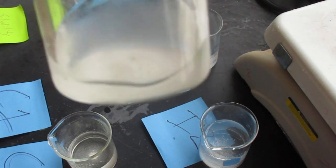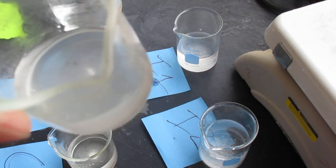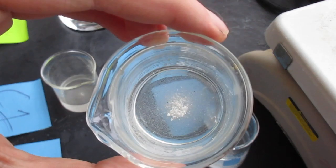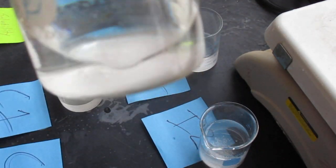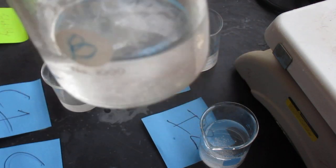This kind of has a milkiness to it, it's not as clear, which is a sign that it didn't dissolve. And this one you can actually see all the big chunks still. You can see that it is cloudy as well.